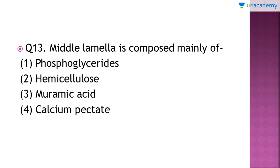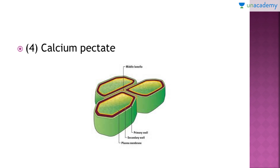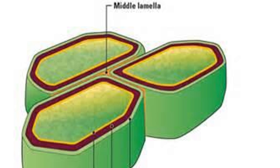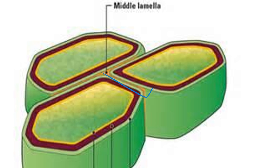Question number 13: 'Middle lamella is composed mainly of which of the following?' The right answer is option number 4 — calcium pectate. The middle lamella is formed mainly of calcium and magnesium pectate, and sometimes pectin too. Its function is to act as cement material between two cells, joining them together, and it also allows movement of several substances.